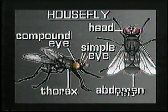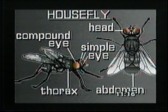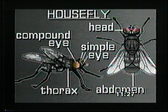This insect is wonderfully made. The house fly has two big brown eyes, and each eye is made up of thousands of lenses — these are called compound eyes. The fly also has three simple eyes on the top of its head, which can only be seen with a magnifying glass. The body of the house fly is divided into three parts: the head, the middle section or thorax, and the abdomen.